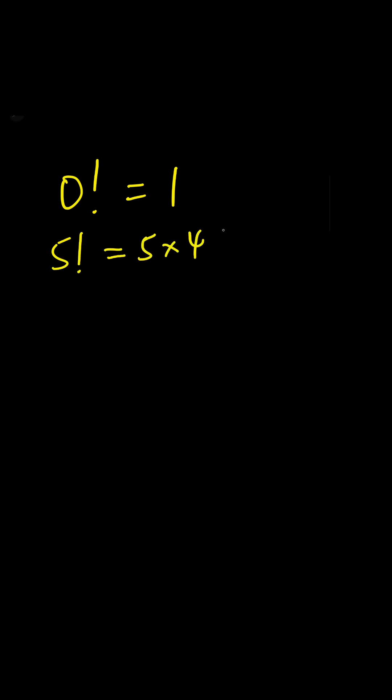Five factorial is equal to five times four times three times two times one, right? But I know we can represent the whole of this with four factorial, because four factorial is four times three times two times one. So let's rewrite this five factorial as five times four factorial, and when you do the calculation you're going to get 120.